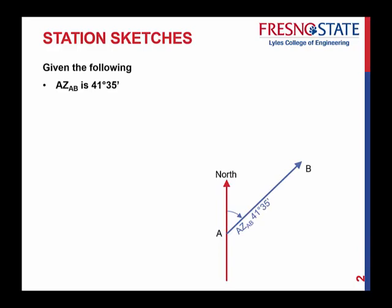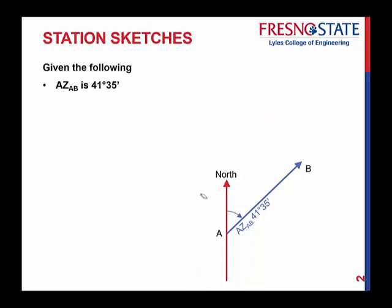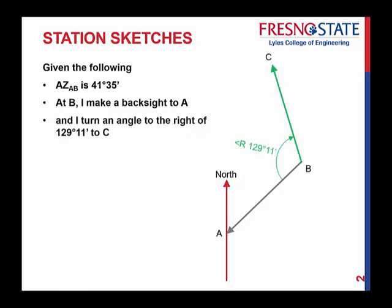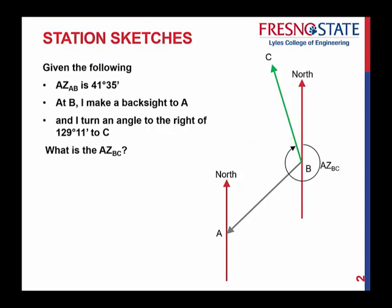So given that I have an azimuth from A to B of 41 degrees, 35 minutes. At B, I'm stationed at B and I make a back sight to A — so I'm looking back at A. Then I turn an angle to the right of 129 degrees, 11 minutes to point C. Point C is my point of interest. So what I want to figure out is: what is my azimuth from B to C given all that information?